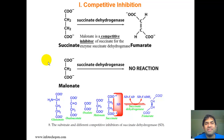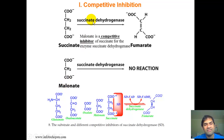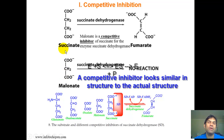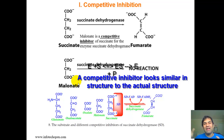An example of competitive inhibition: succinate to fumarate is a TCA cycle reaction catalyzed by succinate dehydrogenase. The active site can also accommodate malonate, but when it does, you get no reaction — so malonate is a competitive inhibitor of succinate. Notice the structural similarity between succinate and malonate, a stereotypical feature of competitive inhibitors.